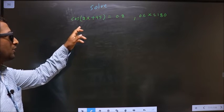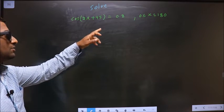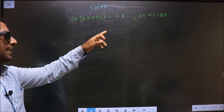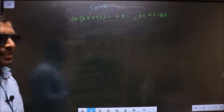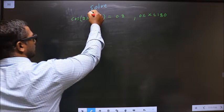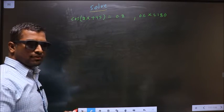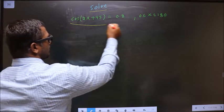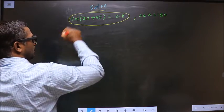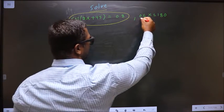Solve cos(2x + 45) = 0.8, where x lies in the interval 0 to 180 degrees. Here they told you to solve, so you should find the values for x satisfying this equation, and also it should lie in the interval 0 to 180 degrees.